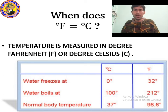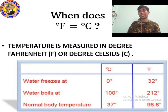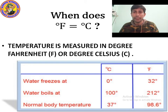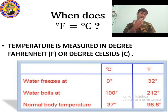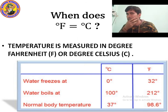When water freezes, the temperature in Celsius is 0 degrees, and in Fahrenheit it is 32 degrees. When water boils and converts into water vapor, the temperature is 100 degrees Celsius, or 212 degrees Fahrenheit. The normal human body temperature is 37 degrees Celsius, or 98.6 degrees Fahrenheit.